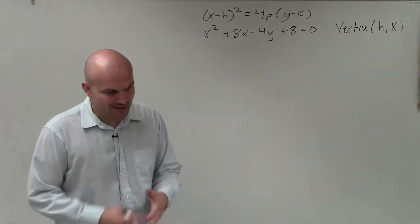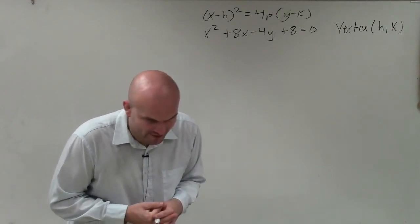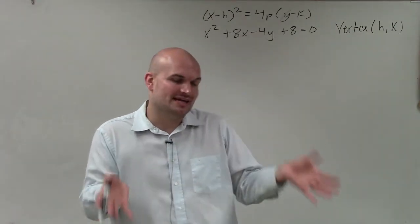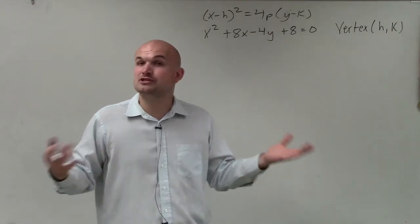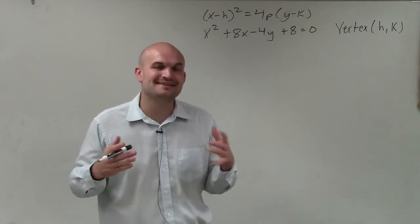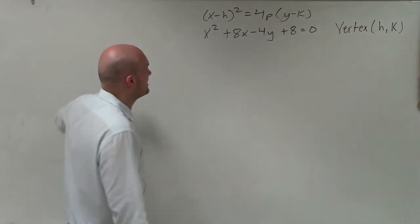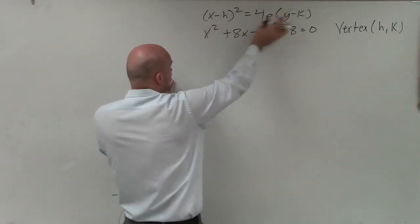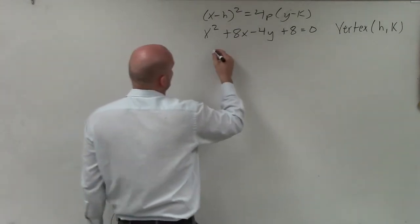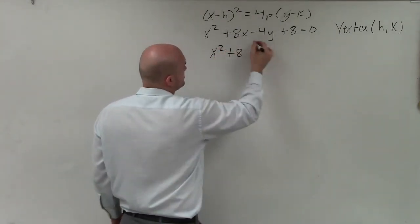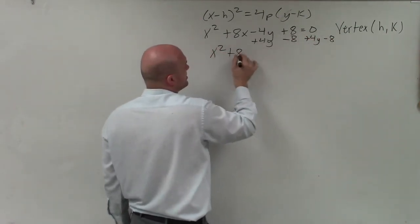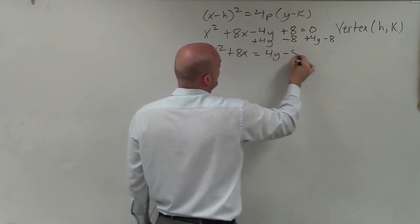We need to put it in that format. The form involves binomial squares, and the only way we've learned in quadratics to go from a trinomial to a binomial squared is to create a perfect square trinomial, because perfect square trinomials can be factored into binomial squares. That process is completing the square. To complete the square, I'm going to isolate my x variable, adding 4y and subtracting 8 from both sides, giving x squared plus 8x equals 4y minus 8.